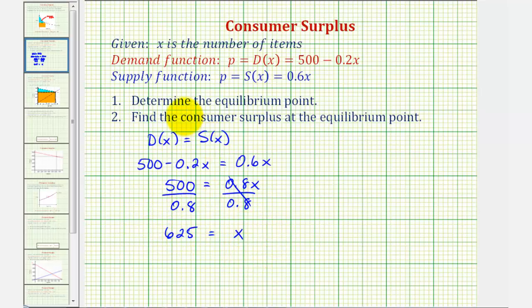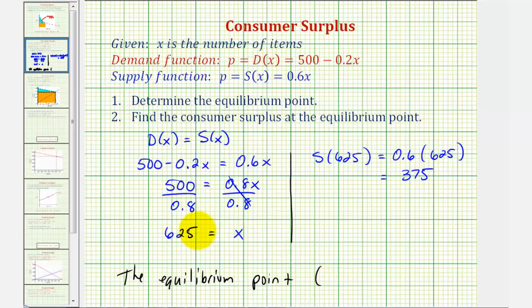Now that we've found the quantity of the equilibrium point, we just have to find the price P. And we can use either the demand function or the supply function to find P. Let's go ahead and use the supply function because it's a simpler function. S(625) would be equal to 0.6 times 625, which is equal to 375. So the equilibrium point would be the point when the quantity Q is 625 and the price P is 375 dollars.